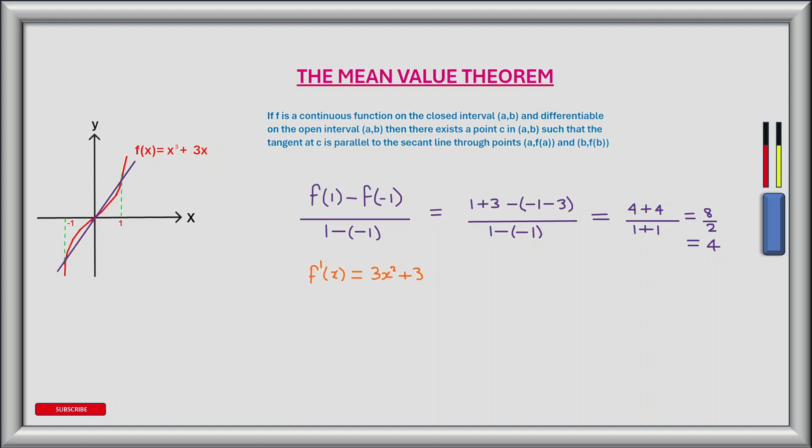So f prime of x, the derivative of f, is equal to 3x squared plus 3. We can now equate this to the average rate of change which is 4. Solving for x: x squared is equal to 4 minus 3 divided by 3, therefore x squared is equal to 1 divided by 3, so x is equal to plus or minus 1 divided by the square root of 3.